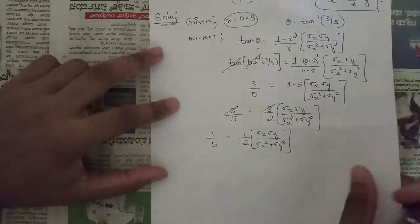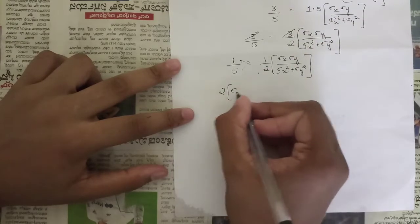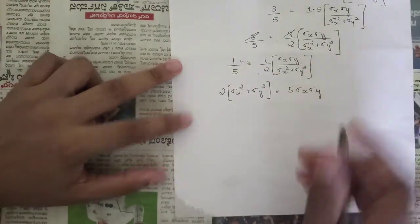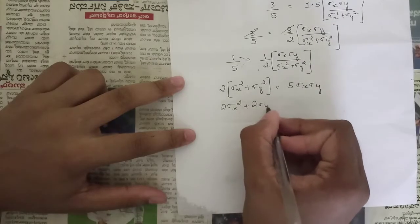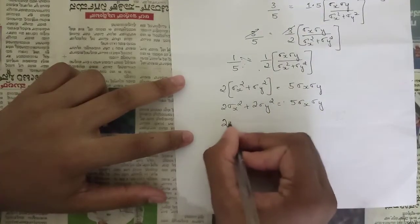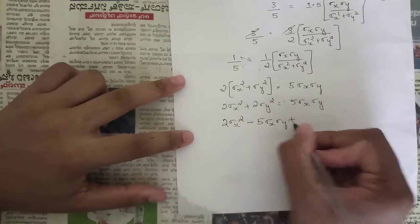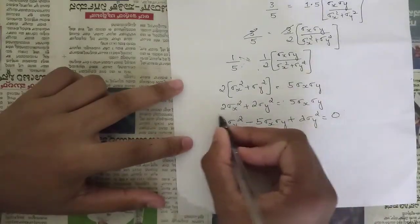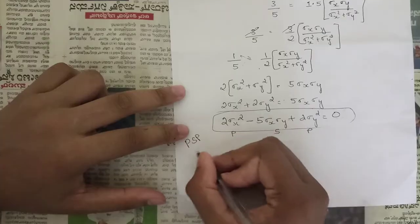Cross multiplying gives 2(σx² + σy²) = 5 σx σy. Expanding: 2σx² + 2σy² = 5σx σy. Bringing all terms to one side: 2σx² - 5σx σy + 2σy² = 0. Now we need to solve this by factorizing using a method called the PSP rule, which we discussed in lower classes.